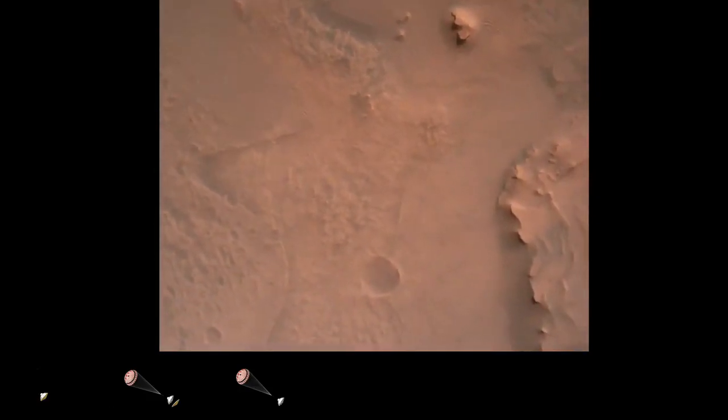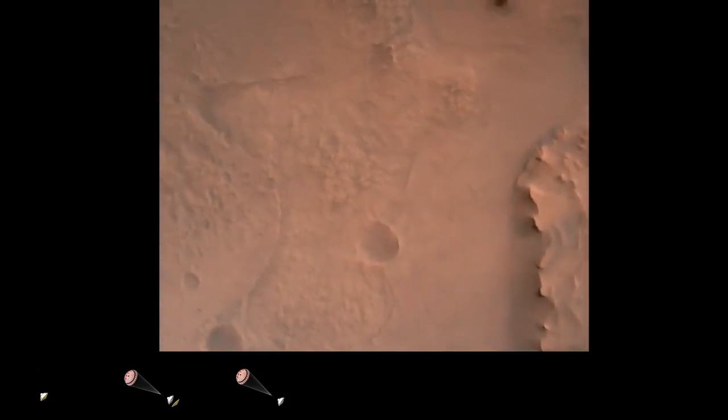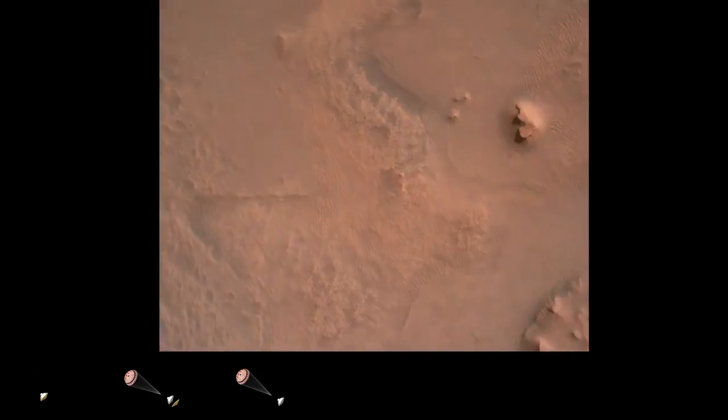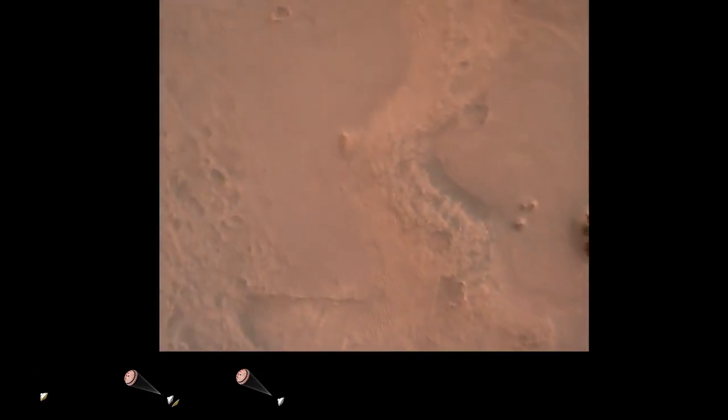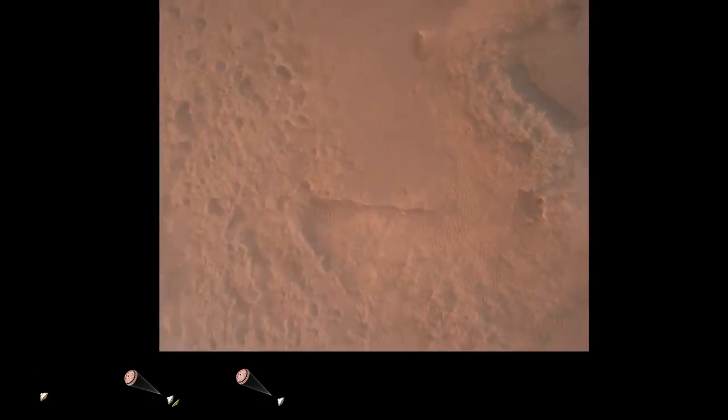Perseverance is continuing to descend on the parachute. We are coming upon the initialization of terrain relative navigation and, subsequently, the priming of the landing engines. Our current velocity is about 90 meters per second at an altitude of 4.2 kilometers.